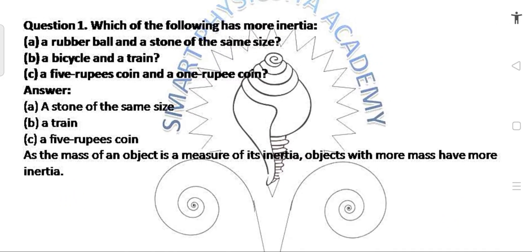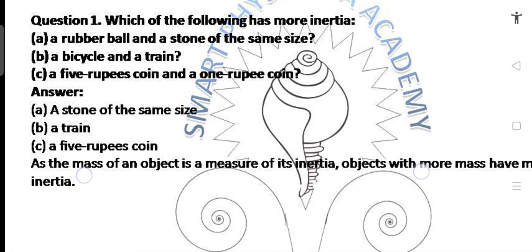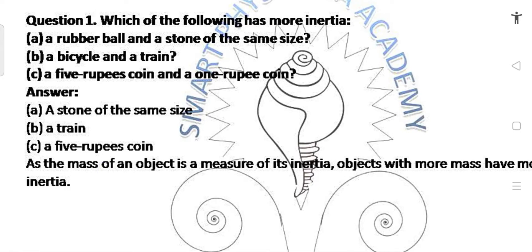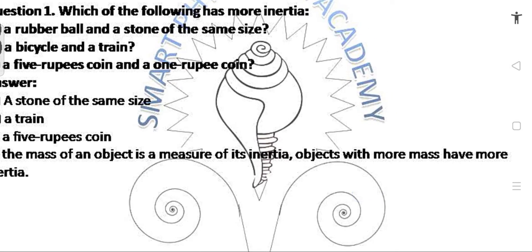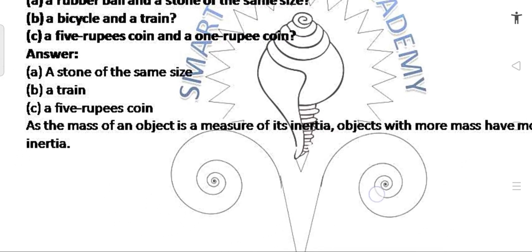Question 1: Which of the following has more inertia? Options: A rubber ball and a stone of the same size — answer is the stone. A bicycle and a train — answer is the train. A 5 rupees coin and a 1 rupees coin — answer is the 5 rupees coin. As the mass of an object is a measure of its inertia, objects with more mass have more inertia.